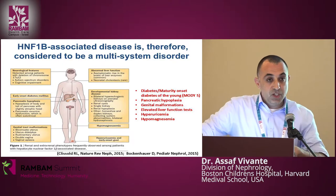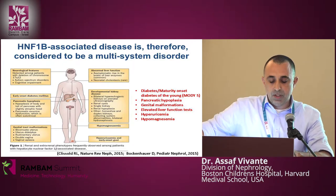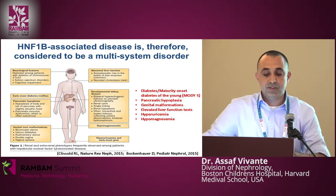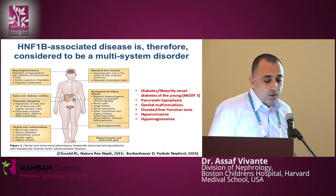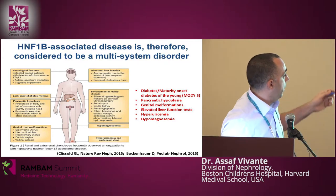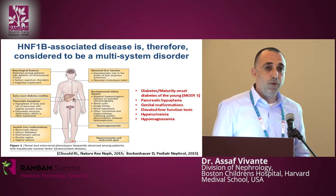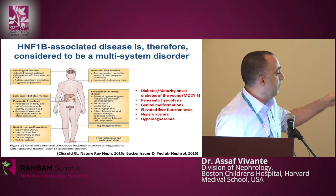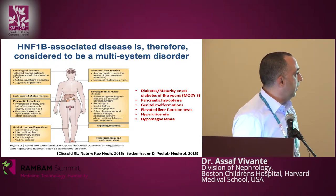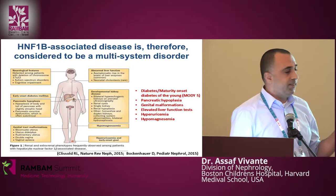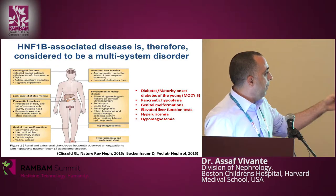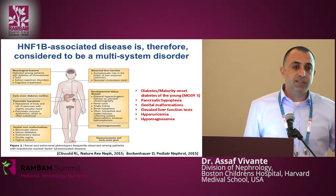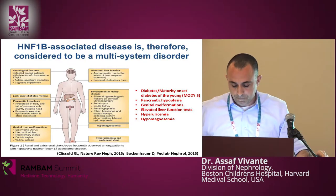This is part of a more well-established entity called HNF1 beta-associated disease. It is considered a multi-system disorder which involves mainly the pancreas — it is responsible for MODY type 5. It can lead to pancreatic hypoplasia, all kinds of different congenital renal anomalies, elevated liver function tests which are pretty stable, hyperuricemia, and hypomagnesemia. When it occurs in the context of a contiguous gene deletion, it can also lead to schizophrenia in adults or autism in children.